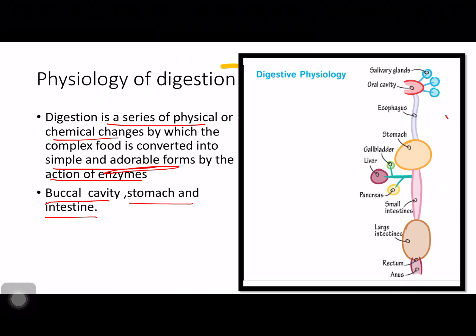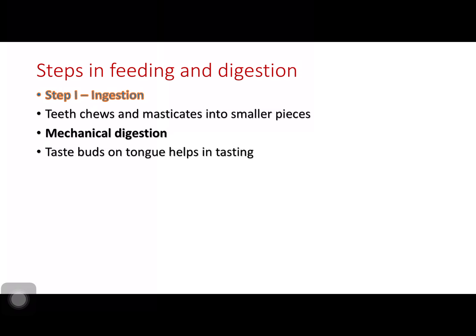Now we move to the main part — Step 1 of digestion — that is ingestion. When we put the bolus of food in our mouth, the teeth chew and masticate the food into simpler pieces, the salivary glands start secreting juices, and this is called mechanical digestion. There are taste buds present in the tongue which help us taste whether the food is sour, bitter, salty, or sweet — four types of taste we detect with the help of taste buds.